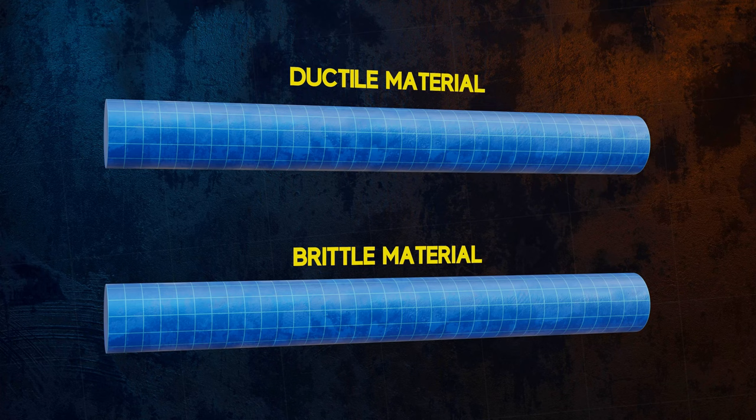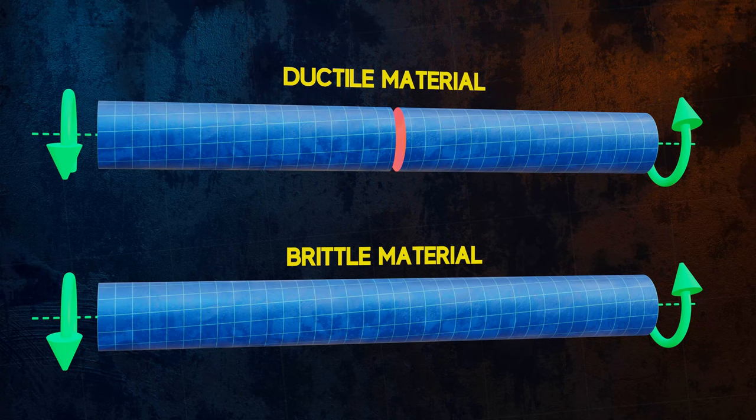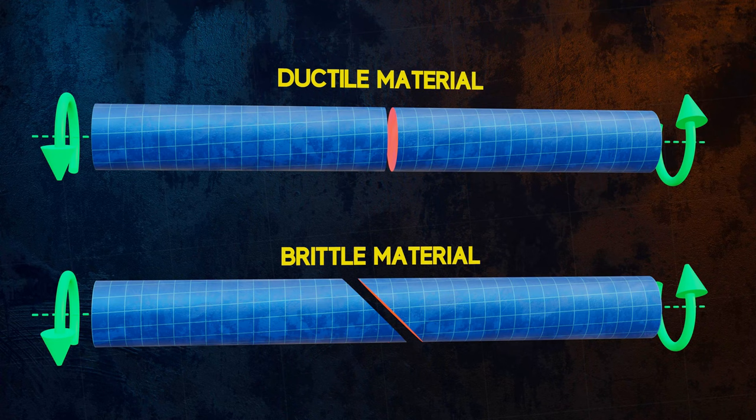The ductile bar fails at an angle perpendicular to its axis, but the brittle bar fails at a 45 degree angle to its axis. We can explain this by remembering that ductile materials tend to fail in shear, and so fracture along the plane of maximum shear stress.